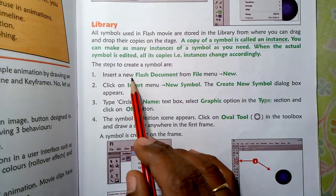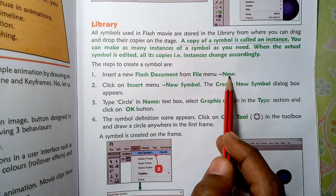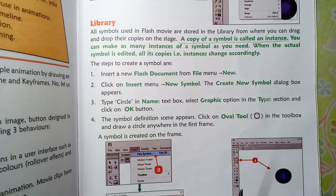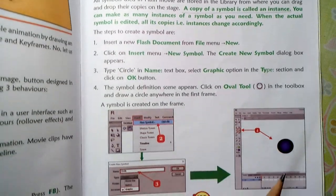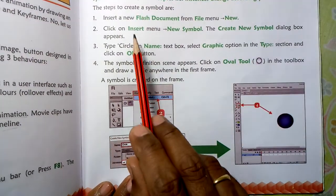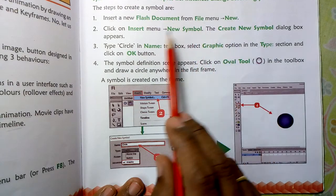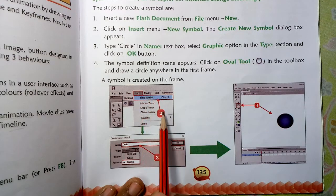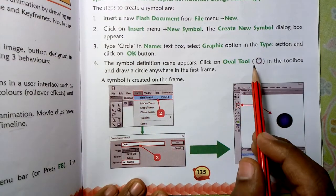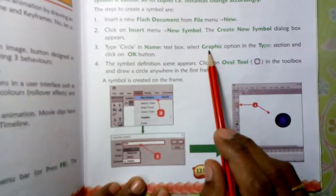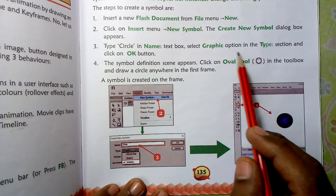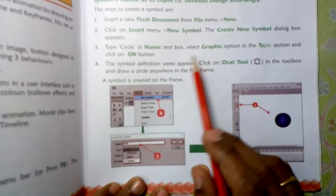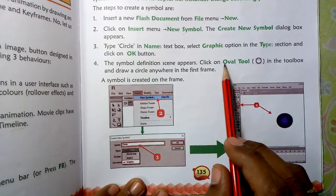Insert a new Flash document from the File menu. Go to Insert, New Symbol — Create New Symbol. Type the name, for example type 'circle'. The symbol definition scene appears. Click on the Oval tool.